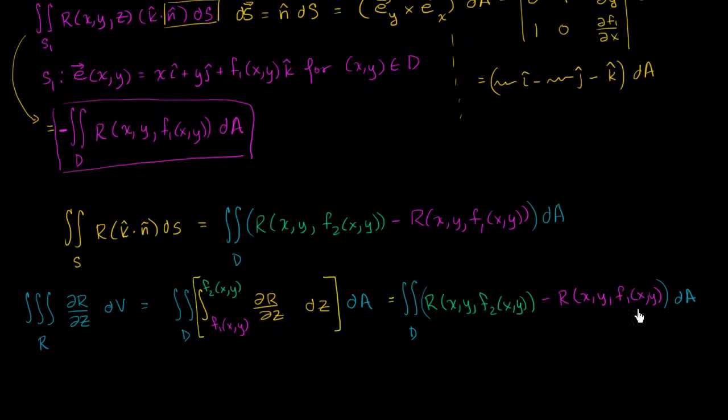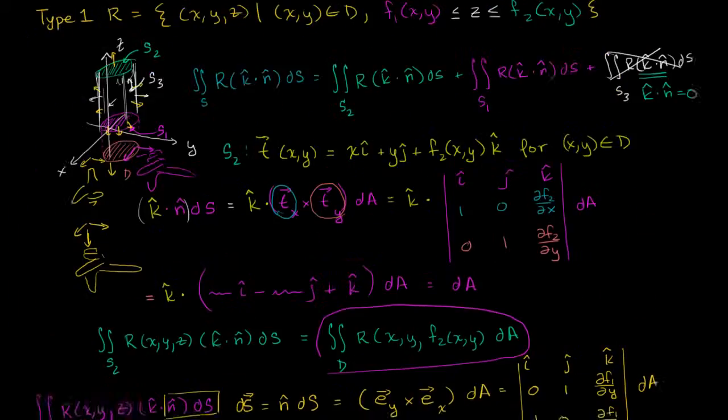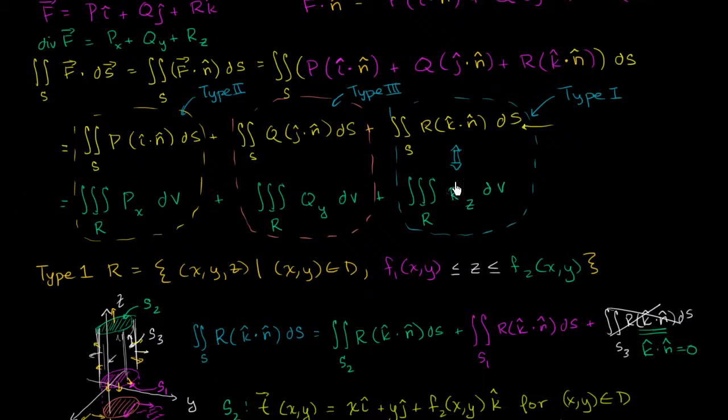Now, this is exactly what we saw in the last video. It shows that this is exactly this. When we assumed it was a type 1 region, we got that this is exactly equal to this. You do the exact same argument with the type 2 region to show that this is equal to this, type 3 region to show this is equal to that. And you have your divergence theorem proved.